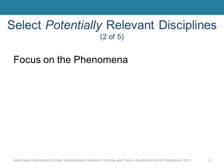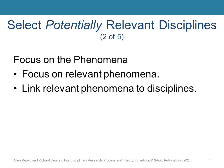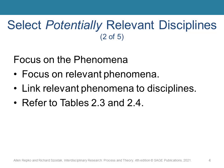To help you identify potentially relevant disciplines, start by focusing on the phenomena that are relevant to your problem. We want to first focus on the phenomena and then try to link that phenomena to disciplines. Use tables 2.3 and 2.4 from chapter 2 to see what disciplines focus on what phenomena.